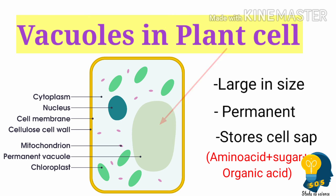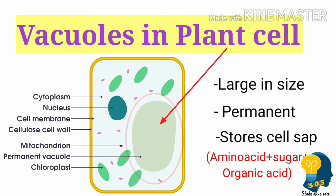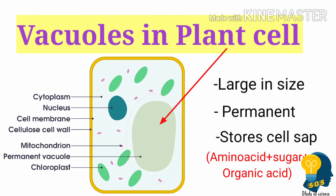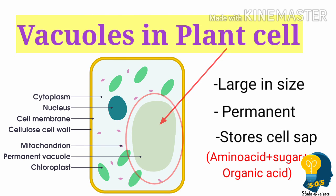In a mature plant cell, the vacuole occupies almost 50 to 90 percent of the cell. If you look at the plant cell, the vacuole is so big it takes up 50 to 90 percent of the space. In animal cells, the vacuole does not occupy such space, as it is temporary and very small in size.